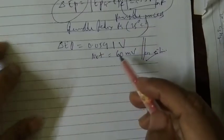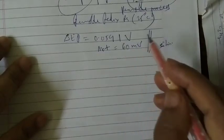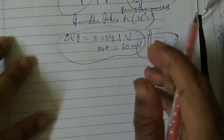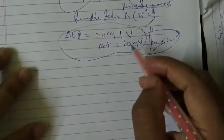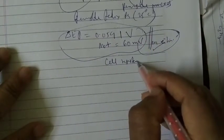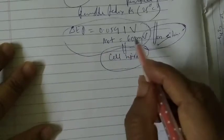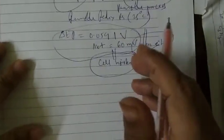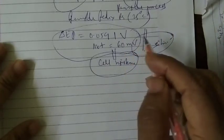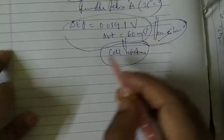In practice, this value of 60 mV is difficult to attain due to cell resistance. Because of the cell resistance factor, we may not get exactly the required value, but we approach it for a reversible reaction.